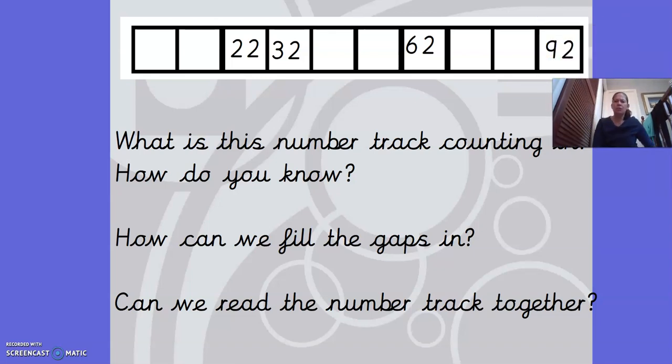So what is this number track counting in? There's some numbers missing on here. How can we work out what it's counting in? The one that gives us a clue is here because there's two numbers together. So 22, 32. Oh, hang on a minute. I know that's counting in 10s, not 2s. So 22, 32. So then this one would be 42. What would the next one be? 52. Okay, 62, yeah. 72, 82. And how we can check it is we know the next one is 92.